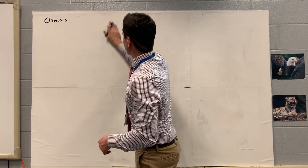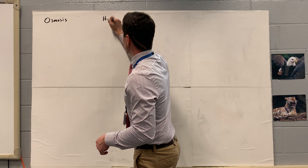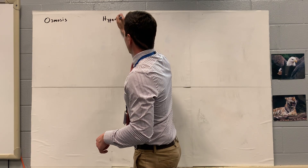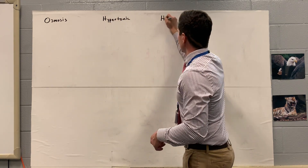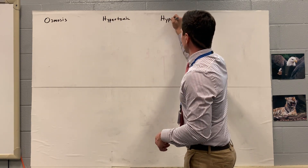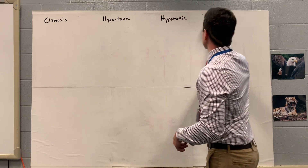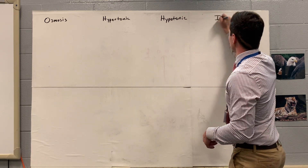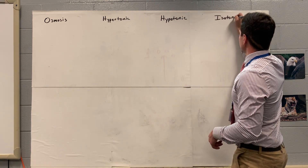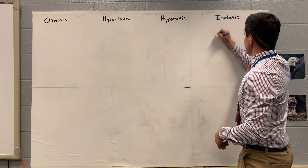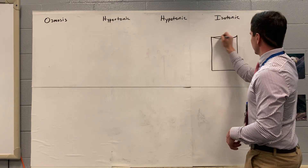We're going to have three types. We're going to have hypertonic, we're going to have hypotonic, and lastly we're going to have isotonic. Isotonic is the easiest of the three, so we'll probably start off with that one.